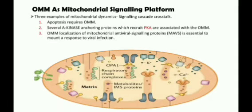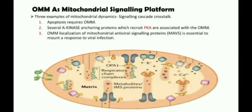The list of signaling cascades that use the outer mitochondrial membrane as a platform grew to the point that mitochondria are now considered signaling organelles. In several circumstances, these signaling cascades are controlled by or influence mitochondrial dynamics. I will illustrate three examples of bidirectional mitochondrial dynamics-signaling cascade crosstalk. The first is apoptosis, which involves outer mitochondrial membrane permeabilization, leading to mitochondrial morphological change and controlled by mitochondrial dynamics.